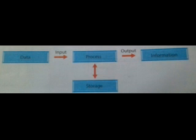The data or instructions that we enter into a computer is called the input. A computer processes the input data by performing certain calculations and stores the result in its internal memory. This information can be used again during processing. Output is the data that has been processed into a useful and meaningful form, called information. The CPU inside the cabinet processes the input and uses storage devices to store all the information. The stored information can be used whenever required.